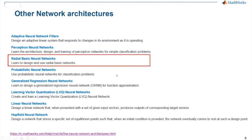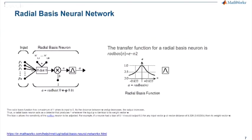For the radial basis neural network, the transfer function RADBAS of N has a maximum of one when the input is zero. When the distance between W and P decreases, the output increases. The bias controls sensitivity. This covers the theory of the radial basis neural network, and these slides will be shared after the session.